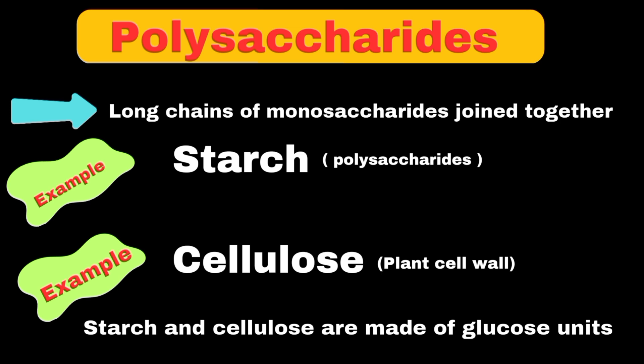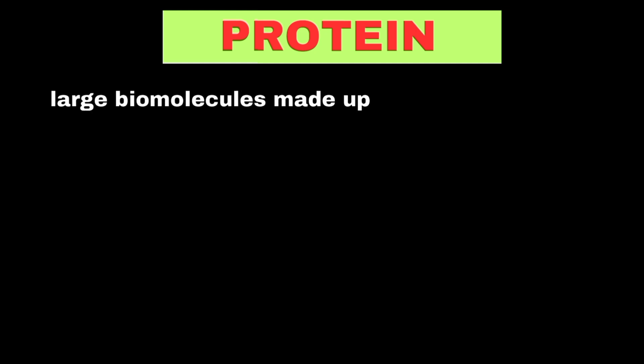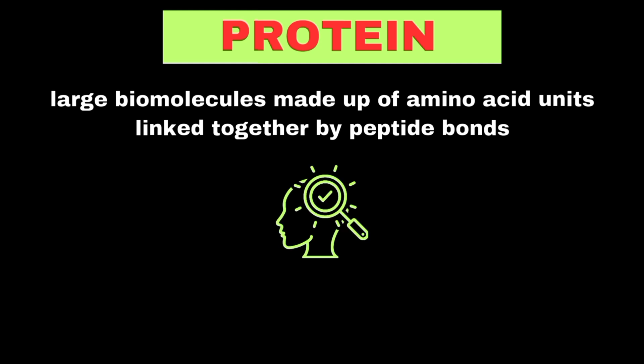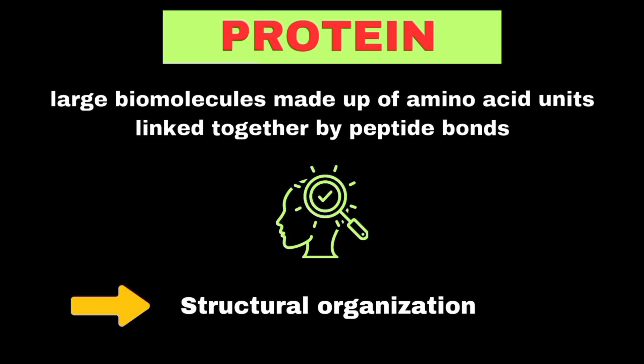This difference is why we can digest starch but not cellulose. Now it's time to explain proteins. Proteins can be defined as large biomolecules made up of amino acid units linked together by peptide bonds. To understand proteins deeply, we need to look at their structural organization, which has four levels.